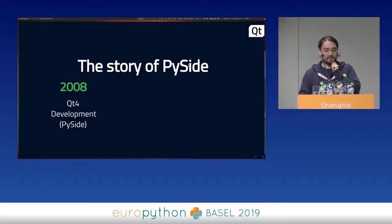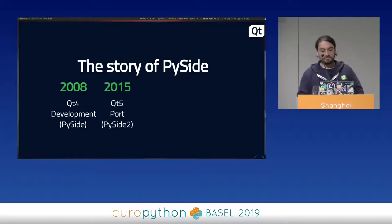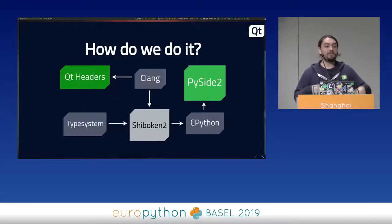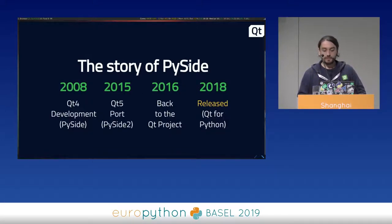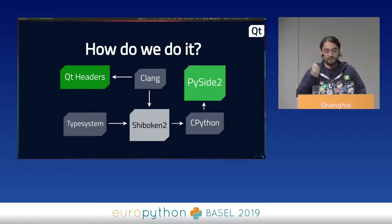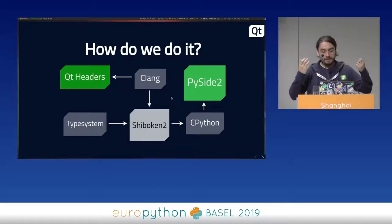They started development of this new tool based on Boost, but then said no, it's too heavy, let's write our own thing. Everything was released properly, development continued, and last year the new set of Qt Python bindings was officially released. The new project is called Qt for Python, also known as PySide2.